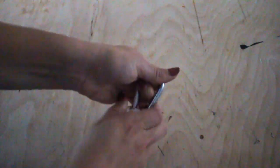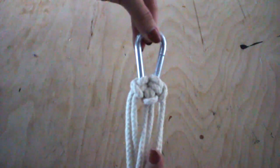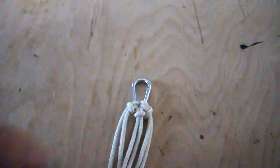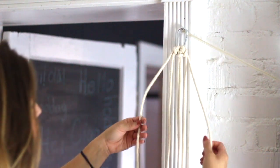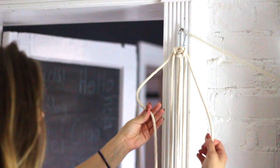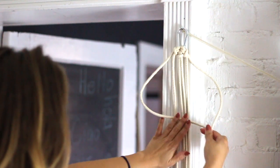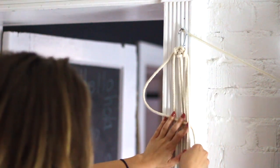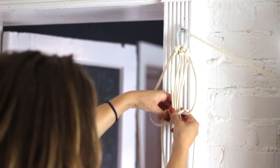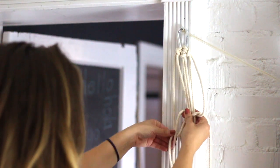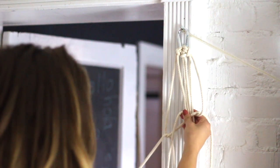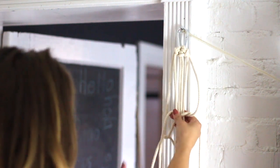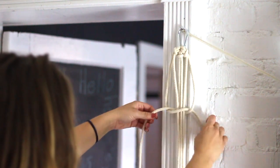Now each carabiner should have 6 pieces of rope hanging down. We're going to use the outside pieces to create the macrame design. First, take the piece of rope that is furthest left and place it over the other ropes creating a 4 shape. Place the rope that is furthest right over the left string and then under the middle ropes and then through the loop of the 4. Then pull both ropes to tighten the knot all the way to the top.